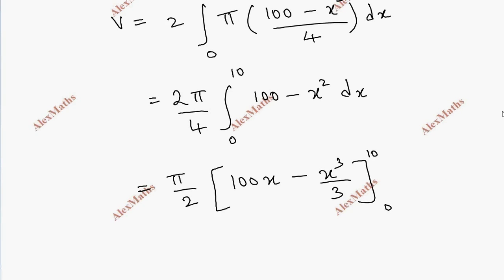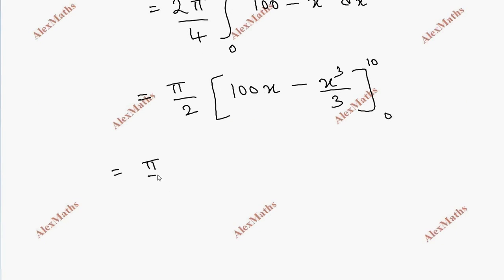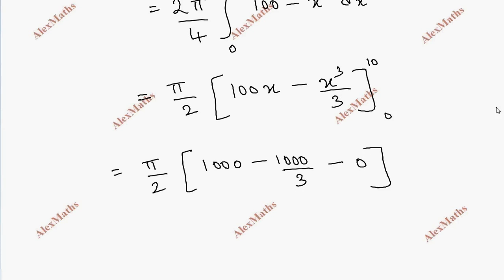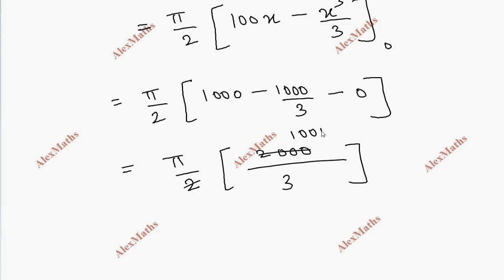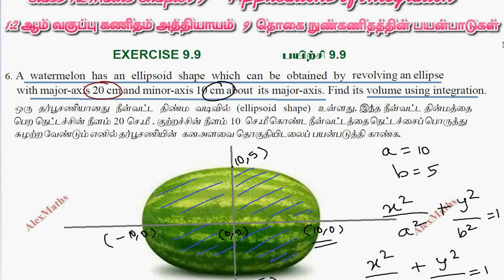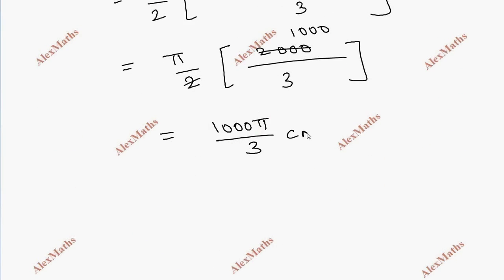Evaluating from 0 to 10: the antiderivative is 100x minus x³/3. At the upper limit: 1000 minus 1000/3. The lower limit at 0 gives zero. So we have pi over 2 times (1000 minus 1000/3), which is pi over 2 times (3000 minus 1000)/3, giving pi over 2 times 2000/3. The final answer is 1000pi/3 cubic centimeters.